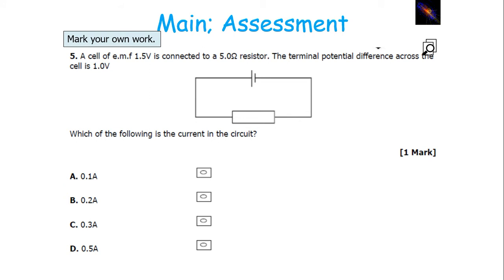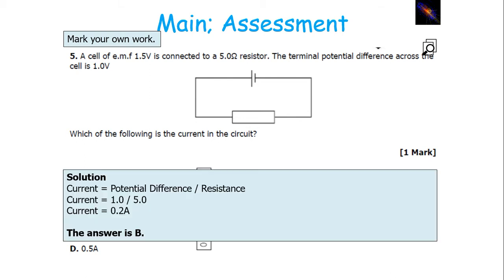In this next question, it says the EMF is 1.5 volts and the potential difference is 1 volt. We know that current equals V over R, but which V do you use — EMF or terminal potential difference? You use terminal potential difference, because the EMF is a theoretical value before considering any internal resistance. So the 5 ohm resistor is only receiving 1 volt of potential difference. You do 1 over 5, giving 0.2 amps, which would be B.